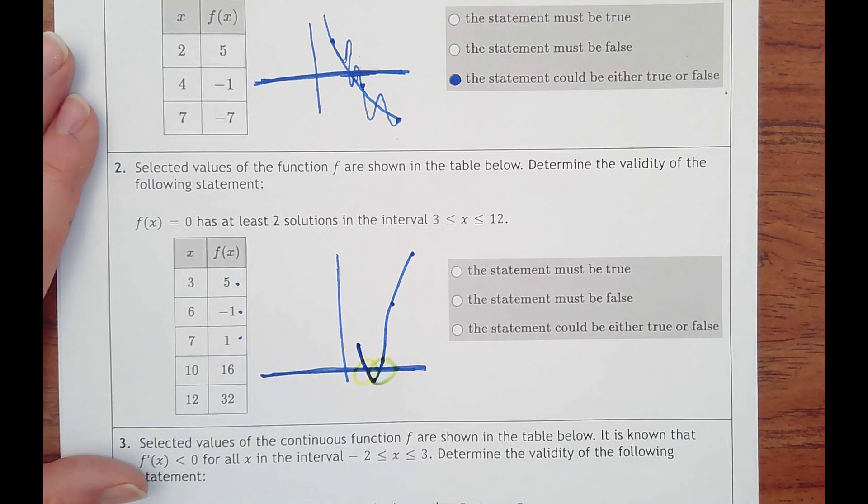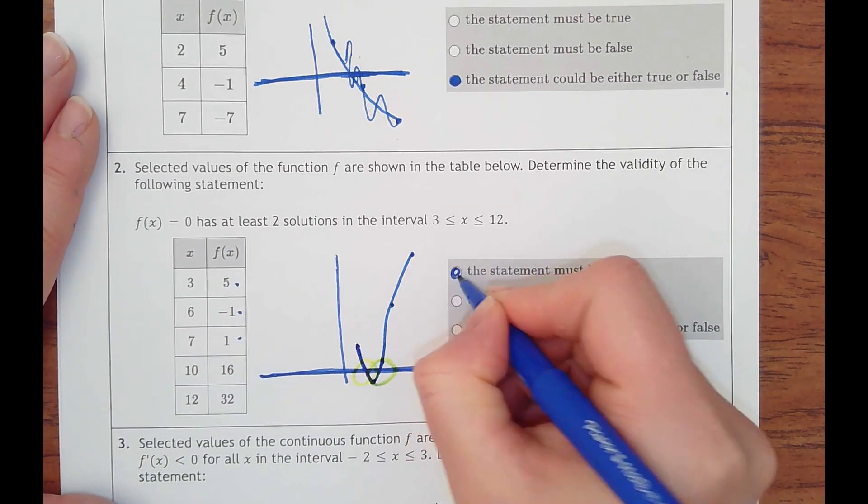we know for sure that there's at least two places where it's going to cross through. If it would have said exactly two, we're not sure, but at least two has to be true.